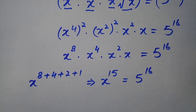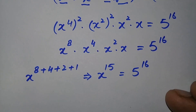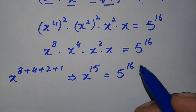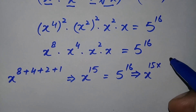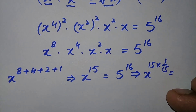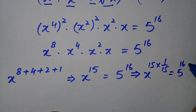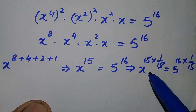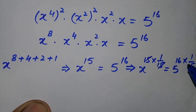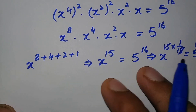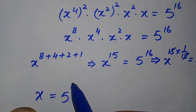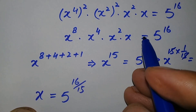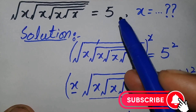We will multiply 1 over 15 in the power on both sides. This implies x raised to power 15 times 1 over 15 is equal to 5 raised to power 16 times 1 over 15. The 15 and 15 will cancel each other, and we multiply the powers on the right hand side. So x is equal to 5 raised to power 16 over 15, which is our required answer to this nice square root problem.